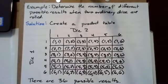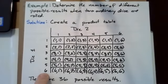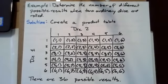Now we can determine the number of different possible results when two ordinary dice are rolled. We create a product table as we did before. Here are the options for die 1, here are the options for die 2. I'm not going to count all of these, but it's a six by six table, so there are 36 possible results.